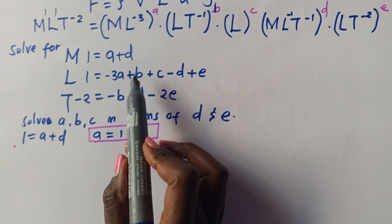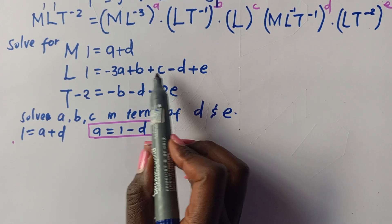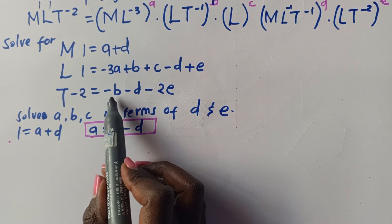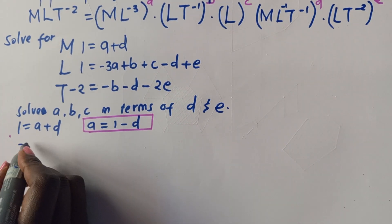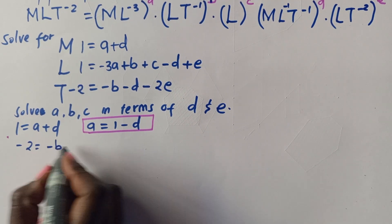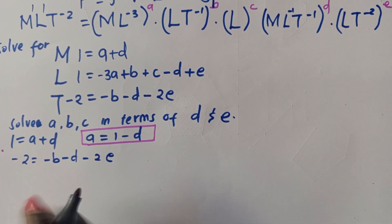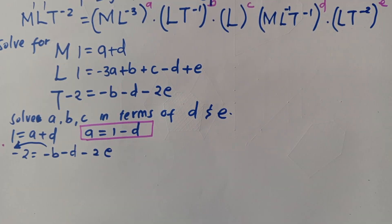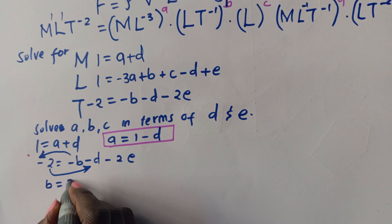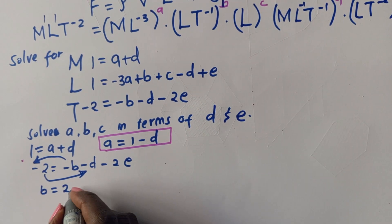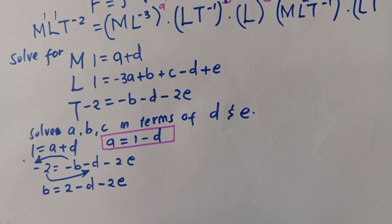From the T equation: negative 2 = negative B minus D minus 2E. Taking B to the other side and 2 to the other side gives B = 2 minus D minus 2E. That is our value of B.